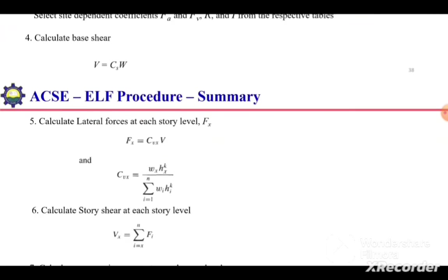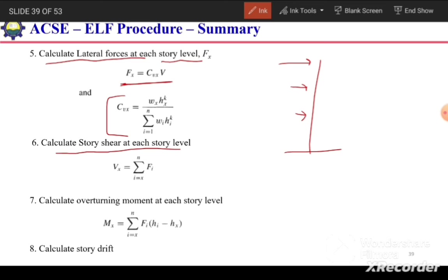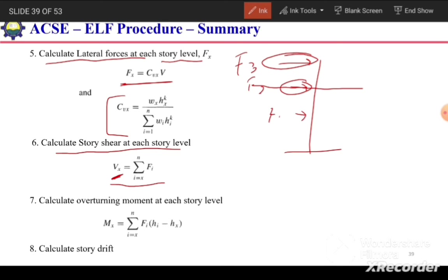After calculating Cs, compute the base shear as Cs times the effective seismic weight of the structure. Then calculate the lateral force at each story level using Fx = Cvx times V, where Cvx is determined from the wx·hx^k expression. Once lateral forces at different levels are known, compute the story shear at each level as the sum of forces from that level upward — for instance, the story shear at a level equals F3 plus F2 plus F1.